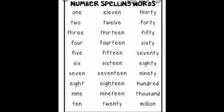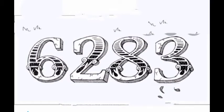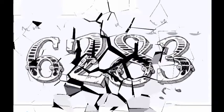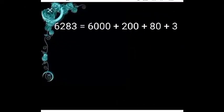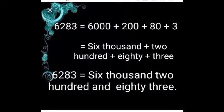Let us see how to write a number in words. First question: 6283. First, write the given number in expanded form: 6000 plus 200 plus 80 plus 3. Write the name of each number below it, and then combine that name.